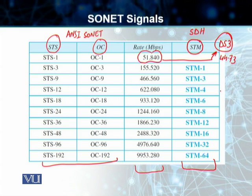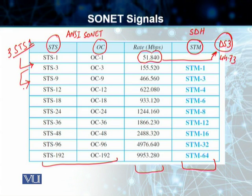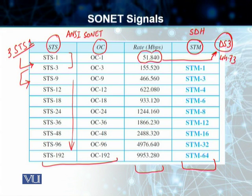Another important fact is that we can multiplex multiple STS signals into a higher-level signal. For example, multiplexing three STS-1 signals gives an STS-3 signal: 51.84 multiplied by 3 equals 155 megabits per second. Similarly, multiplexing three STS-3 signals gives STS-9, and so on. The basic unit is STS-1, but we can multiplex to higher data rates when higher bandwidth is available on the optical fiber cable for carrying data over long distances.